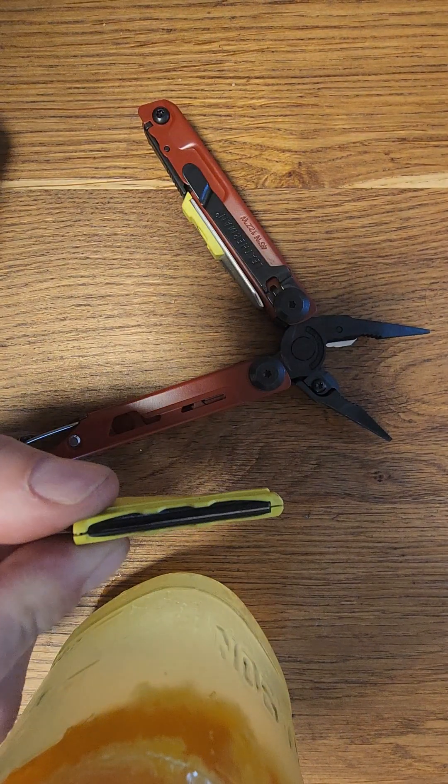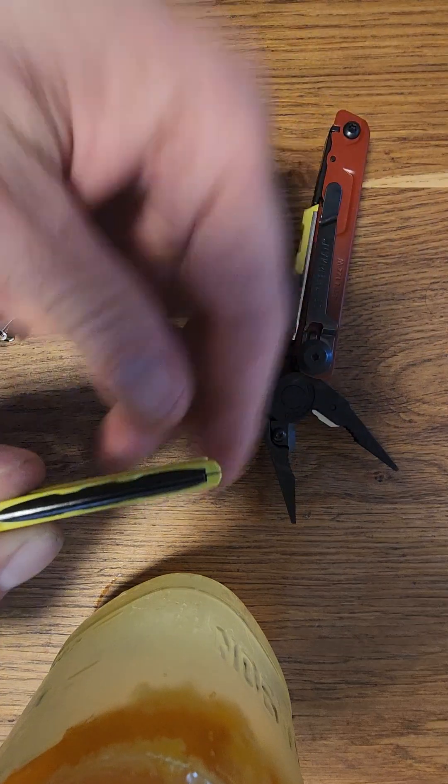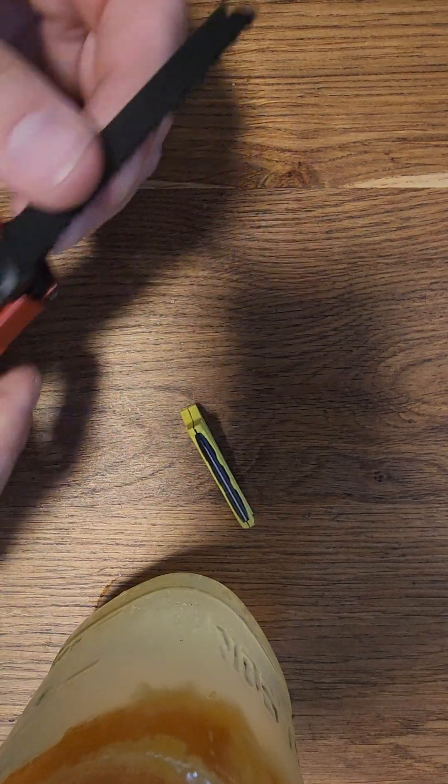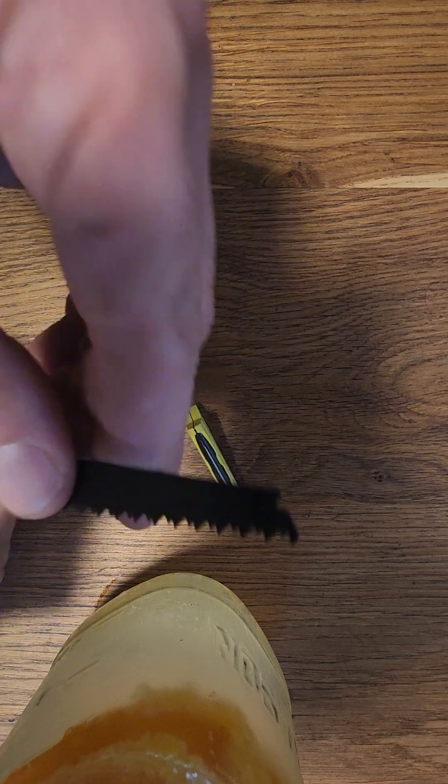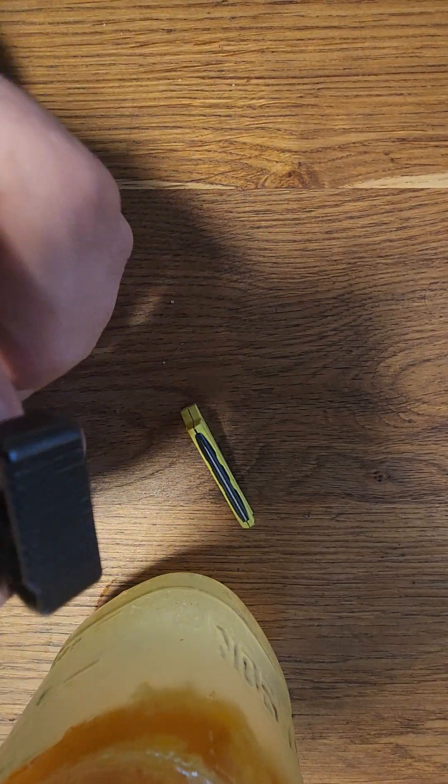And then look at that, on this side you've got a ferro rod that you can use with your serrated blade there. Let's do a test, let's not start a fire here. Oh look at that, it works! Not bad. So that's the Leatherman Signal, and obviously that's a loop hook right there.